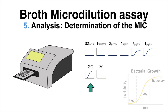Taking a look at the results, the growth control shows a typical growth curve, as expected. The sterile control does not display any increase in turbidity, since no bacteria should have contaminated the medium. Low concentrations of the compound — 2 and 1 microgram per ml — were not sufficient to prevent bacterial growth. Higher concentrations, ranging from 32 to 4 microgram per ml, however, were enough to inhibit growth.